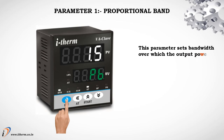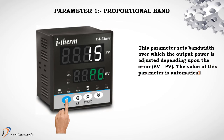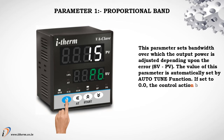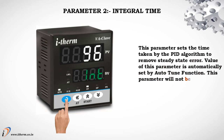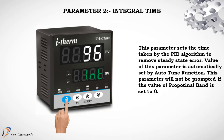Parameter 1: Proportional Band. This parameter sets the bandwidth over which the output power is adjusted depending upon the error. The value of this parameter is automatically set by the auto tune function. If set to 0.0, the control action becomes on/off. Parameter 2: Integral Time. This parameter sets the time taken by the PID algorithm to remove steady state error. The value of this parameter is automatically set by the auto tune function. This parameter will not be prompted if the value of proportional band is set to 0.